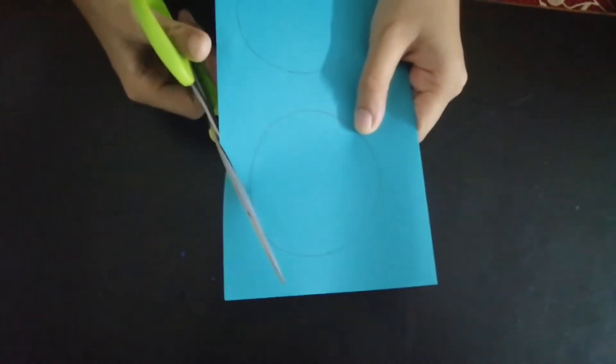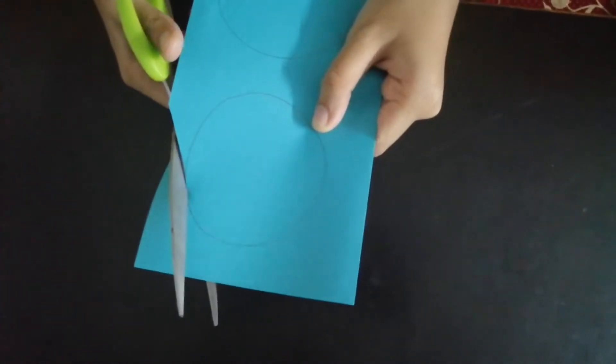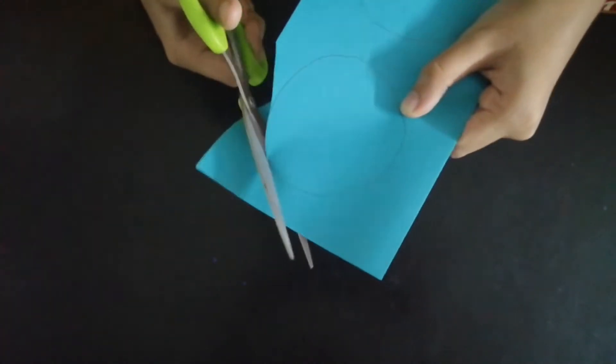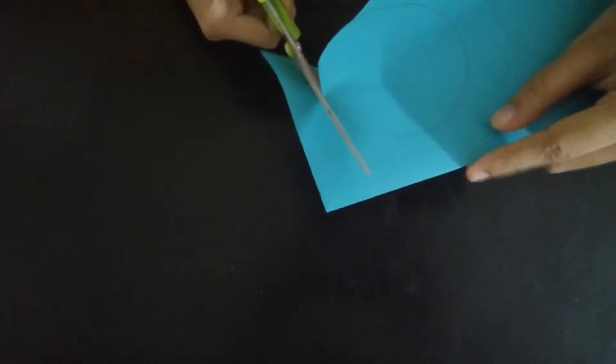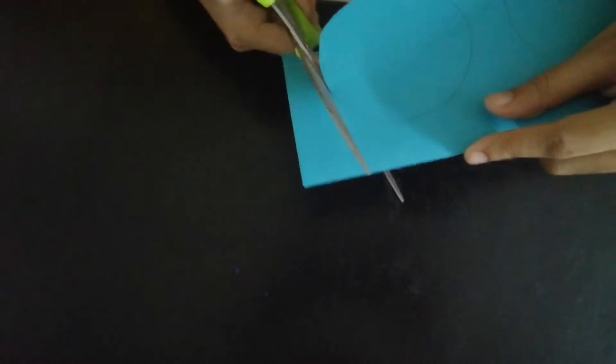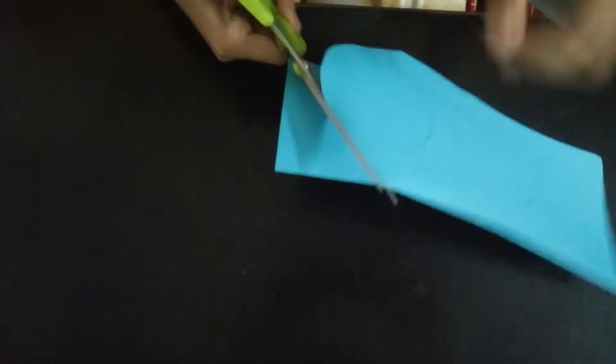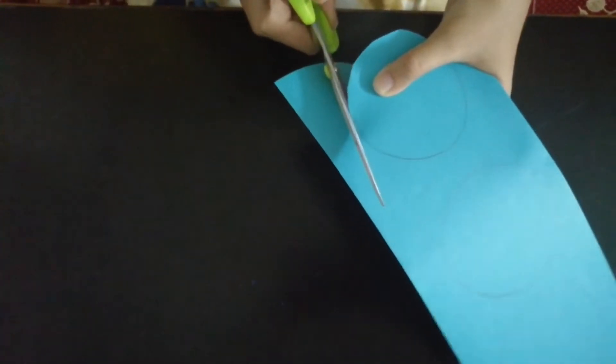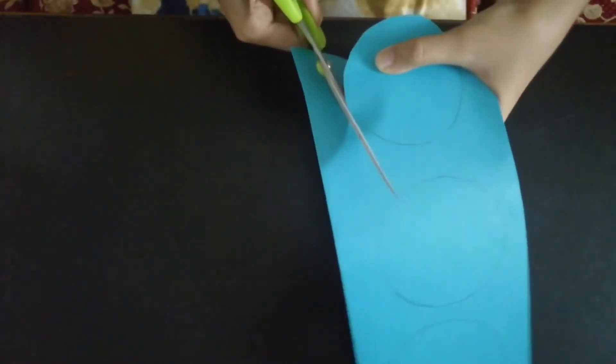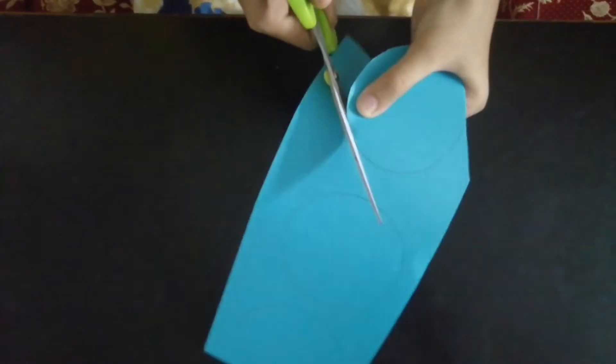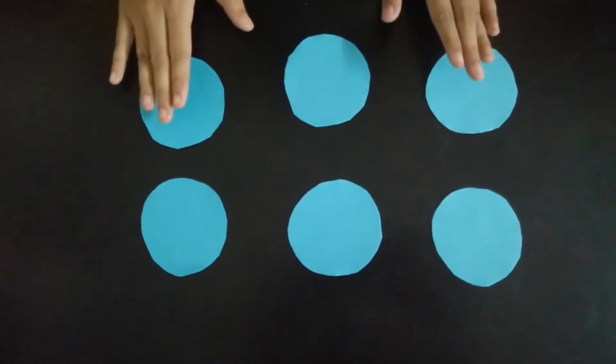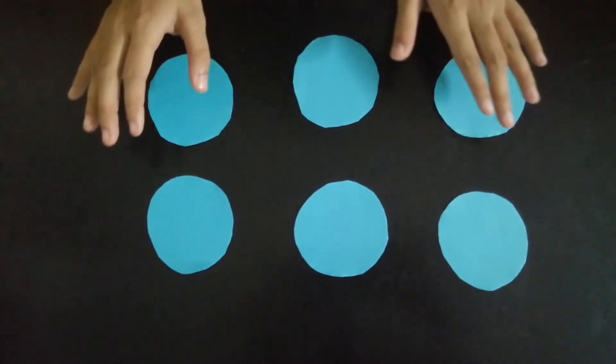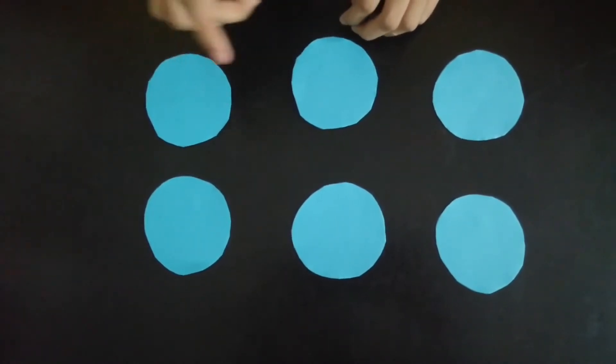Then we have to cut the circles like this. Now we have got 6 circles. We have to do the same steps for 3 papers.